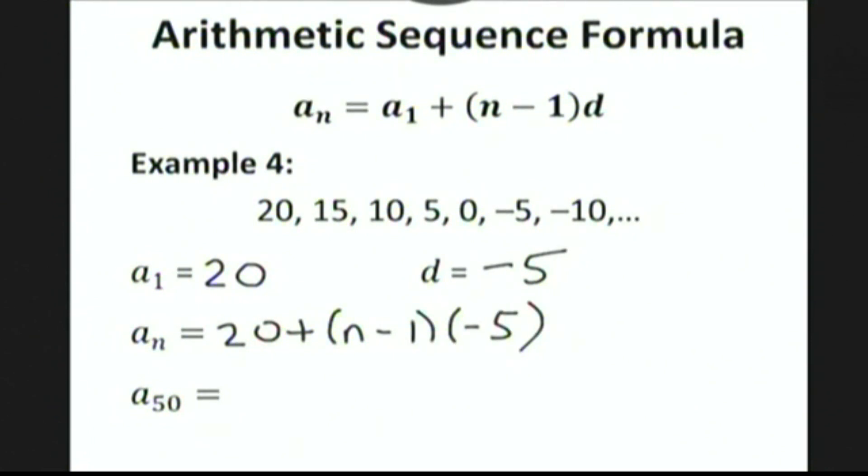We could simplify this if we want by distributing, and we could combine the 20 and the 5 to get 25 minus 5n.